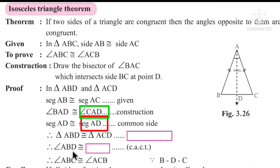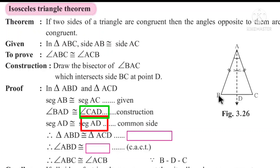Therefore, angle ABD ≅ angle ACD. Since BD and BC are in the same direction, angle ABD means angle ABC, and angle ACD means angle ACB. Therefore, angle ABC ≅ angle ACB. This is the Isosceles Triangle Theorem.